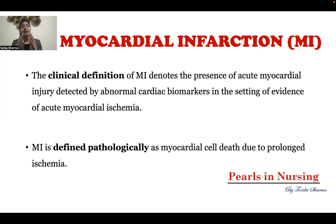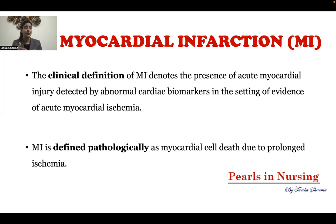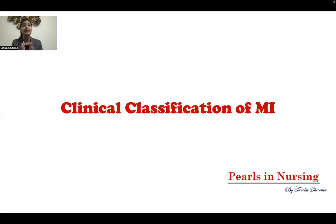Then we have the pathological definition of myocardial infarction. Pathologically, we can define MI as myocardial cell death due to prolonged ischemia — the person had prolonged ischemia because of which cell death has also occurred. Now coming to the topic which is clinical classification of myocardial infarction. Clinically we can classify MI into different classifications; we'll talk about them one by one.